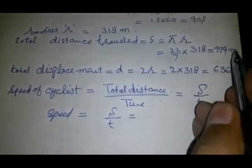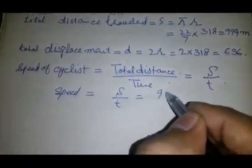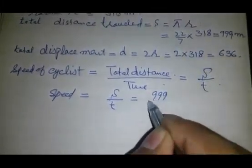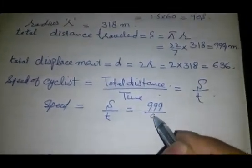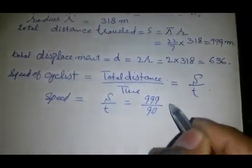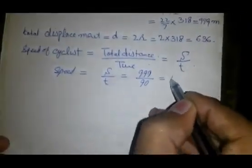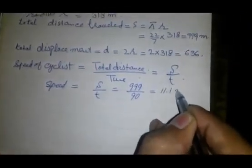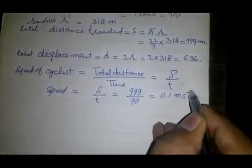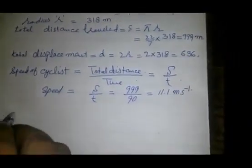S equals total distance 999 over time 90 seconds, equals 11.1 meters per second.